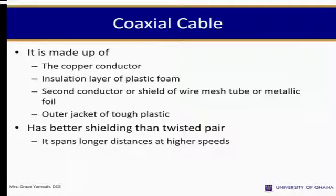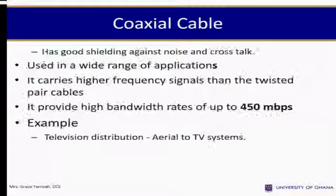Coaxial cable is made up of a copper conductor, an insulation layer of plastic foam, a second conductor or shield of wire mesh or tube or metallic foil, and an outer jacket of plastic. It has better shielding than twisted pair cable and spans longer distances at higher speeds.